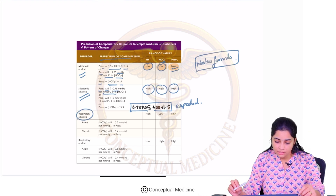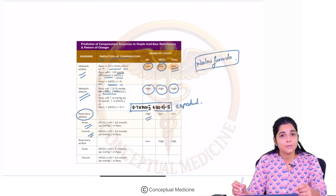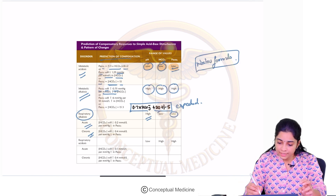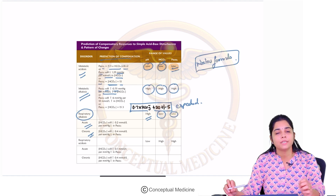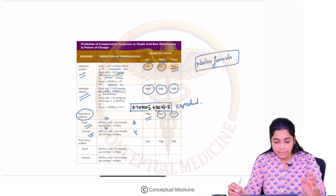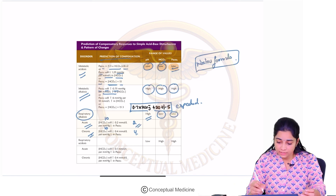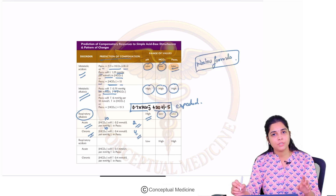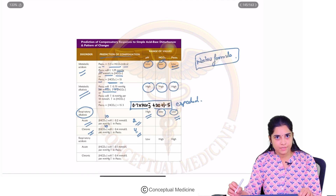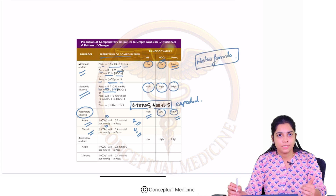In respiratory alkalosis, the pH is high and PCO2 is low. The kidneys compensate by excreting excess bicarbonate. Remember the numbers 2 and 4: for every 10 mmHg fall in PCO2, the bicarbonate will decrease by 2 in acute respiratory alkalosis and by 4 in chronic respiratory alkalosis.